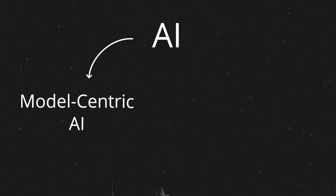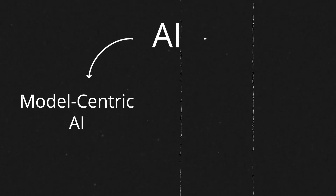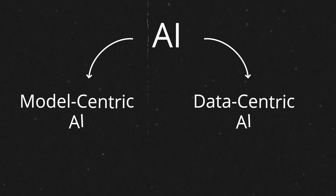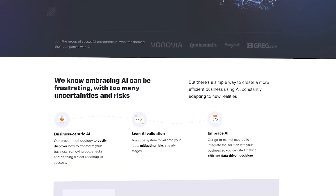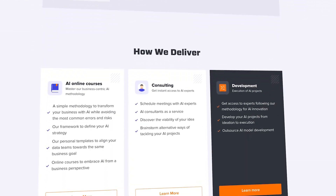In AI there are two main tribes: model-centric AI and data-centric AI, and in this video I will explain these two concepts. We believe there is a third pattern that people ignore, which is business-centric AI, and we believe this is the most important pattern you need to follow when dealing with embracing AI models in any company.